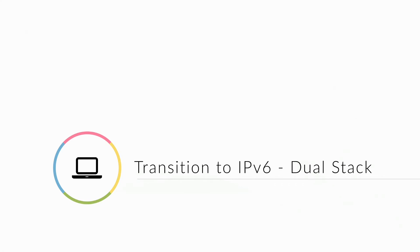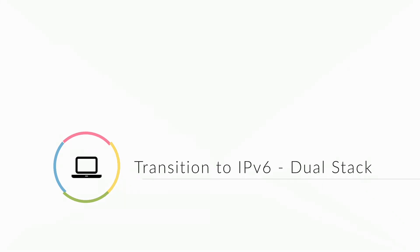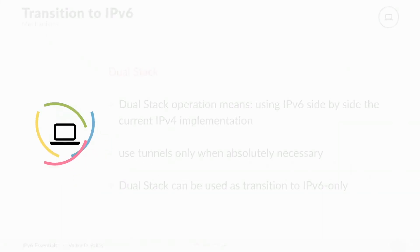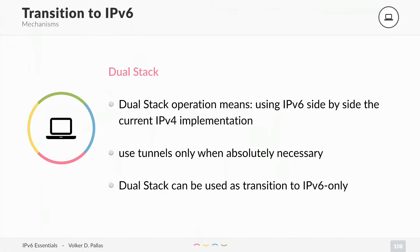This is not a problem. You can implement IPv6 side-by-side with IPv4 without any negative impact. Please only use tunnels when absolutely necessary, because tunnels are not nice and you don't want them.